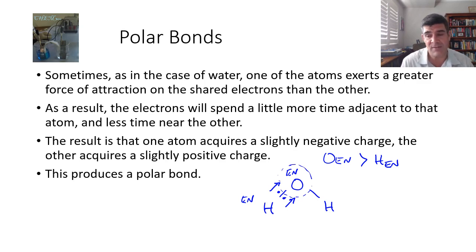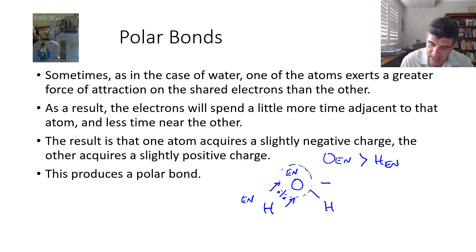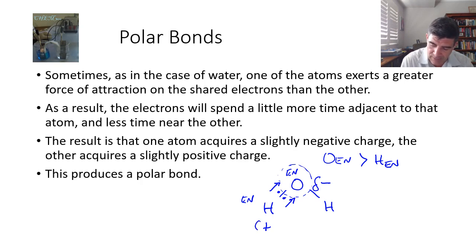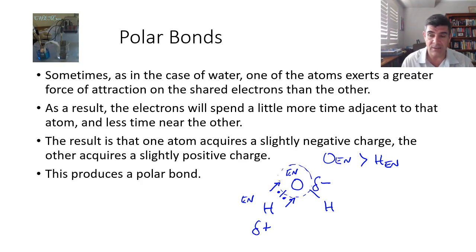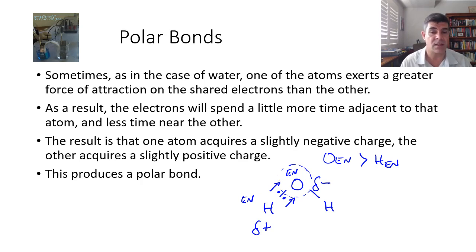The way we represent that to distinguish it from an ionic bond is to say that this has a negative and a positive, but it's not ionic in nature. It's a slightly negative — a little delta, the lowercase Greek letter delta. Delta negative for the oxygen and delta positive for the hydrogen. They're not ions, but they behave similarly by having a slightly positive and slightly negative charge, just not to the same extent as ionic substances do.